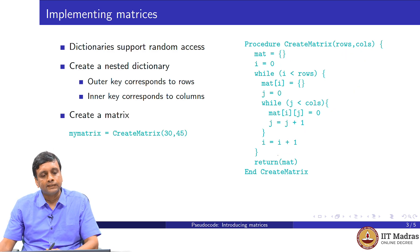When I want to create a matrix, I will just pass two numbers: the number of rows I want and the number of columns I want. Create matrix will create this nested dictionary and give it back to me and I assign it to a variable. My matrix is create matrix 30 comma 45. So now I have row indices 0 to 29, column indices 0 to 44.